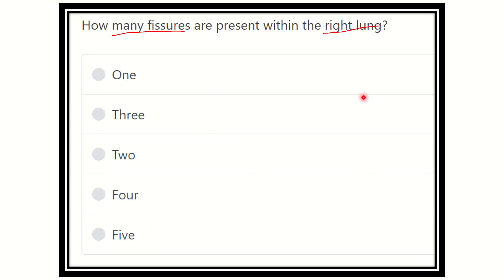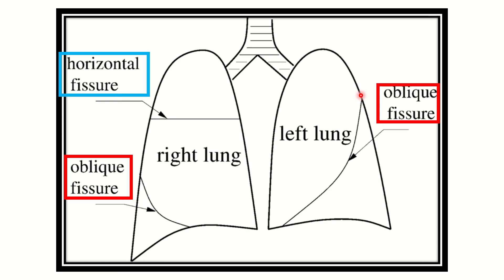First, let's look at the right lung and the fissures present in it. In this picture, we can see the right lung. Here is the horizontal fissure — horizontally placed, this is called the horizontal fissure. And here we can also see another fissure, which is the oblique fissure. So the right lung has two fissures: the horizontal fissure and the oblique fissure.